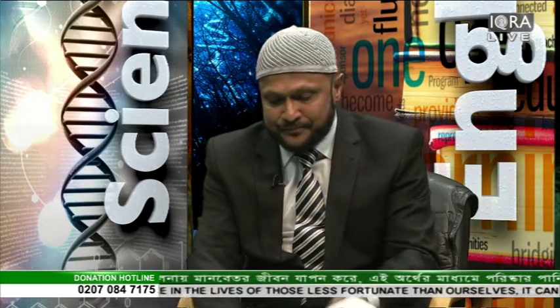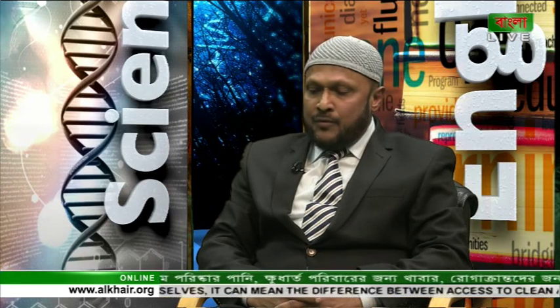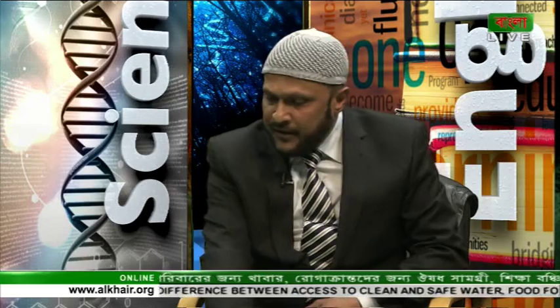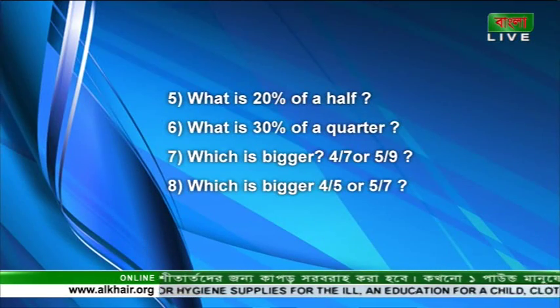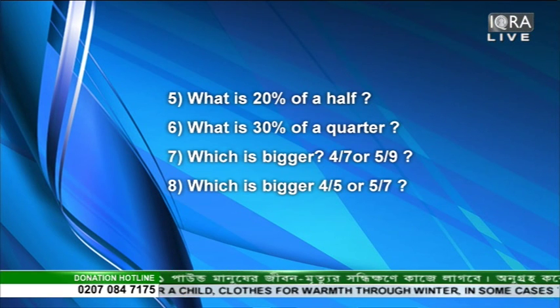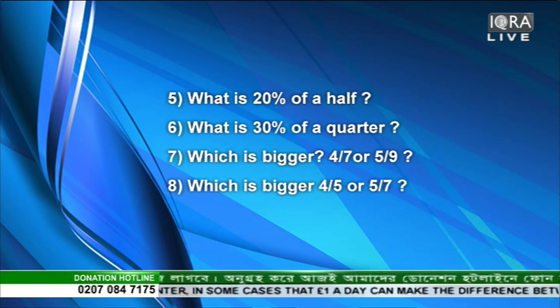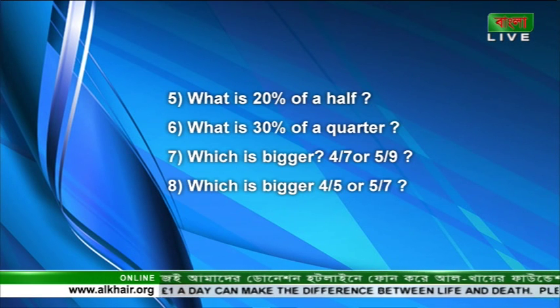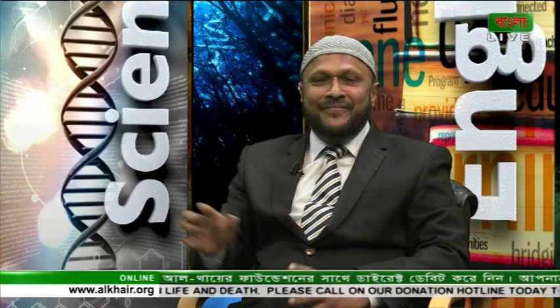We will go on to question number seven, which we didn't finish. Number eight is for the children. For question seven: which is bigger — four sevenths or five ninths? As I said, the first method is to make a common denominator, the second is to convert to decimals, and the third is to convert to percentages.